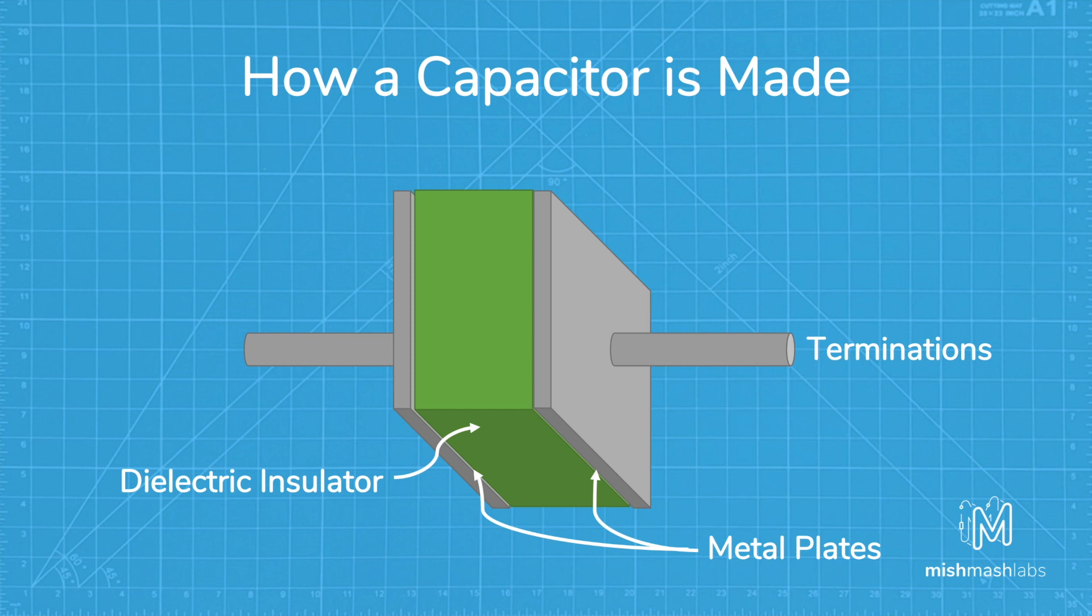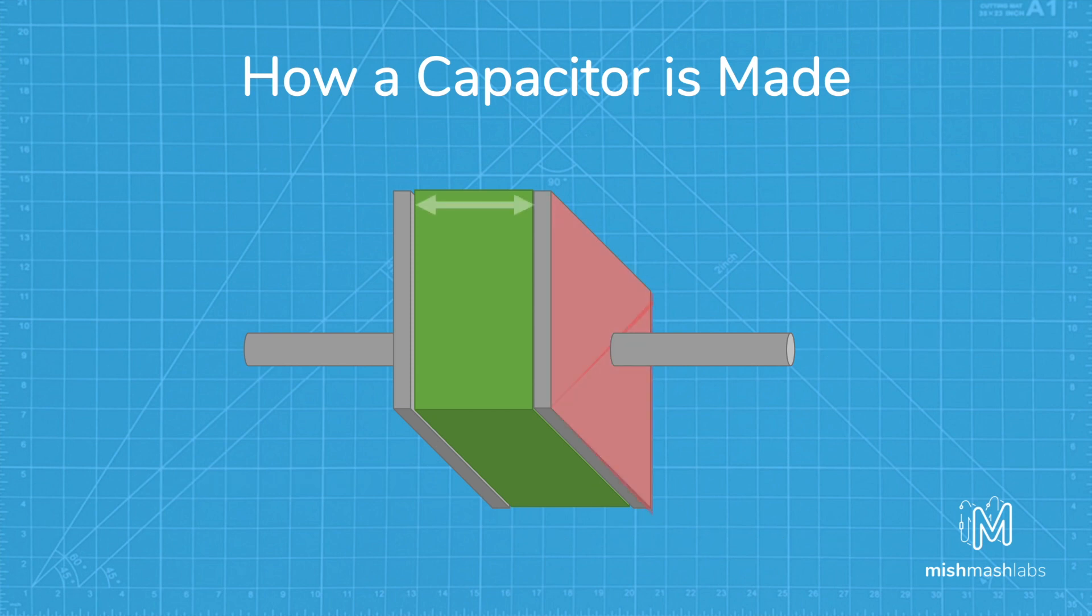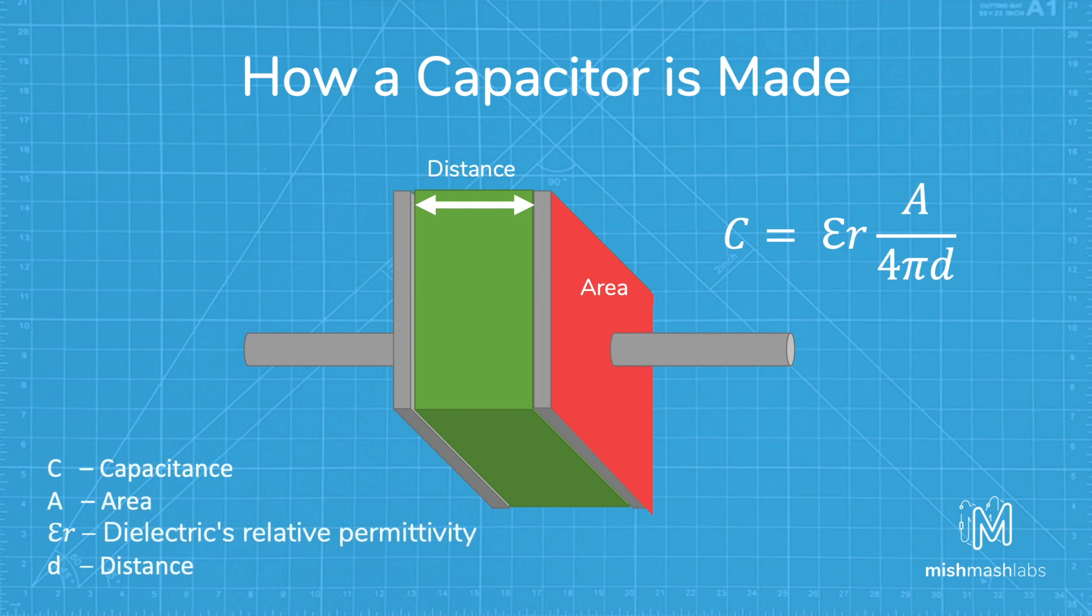plastic or basically anything that will stop current from flowing. The plates are usually made from aluminium, tantalum or silver. The number of farads a capacitor has, or its capacitance, can be calculated using the equation above. Larger capacitors tend to have more capacitance.